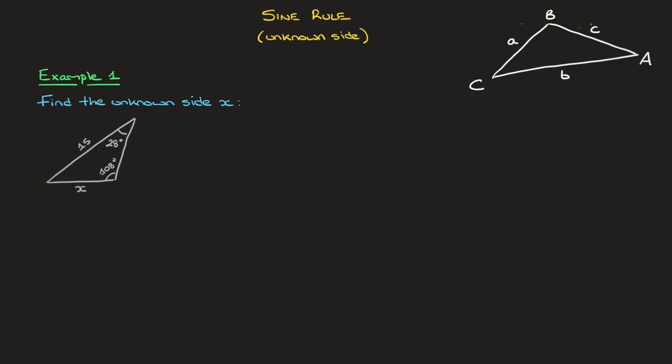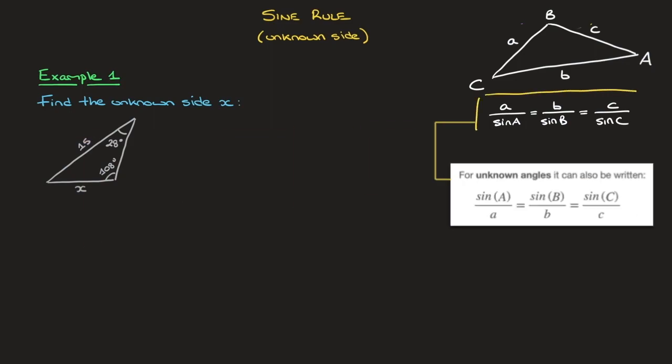The sine rule states that A over sine of A equals B over sine of B, which equals C over sine of C. And I'll go ahead and box that. Do make a note of it.